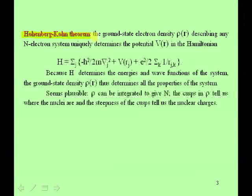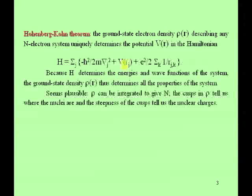Let me verbalize what's called the Hohenberg-Kohn theorem, which is the fundamental underpinning of density functional theory. It says that the ground state electron density rho(R) describing any electron system uniquely determines the potential V in the Hamiltonian.